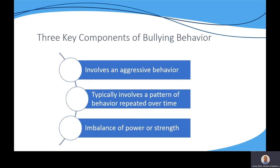Bullying is characterized by three components. It involves an aggressive behavior — behavior is not always physical. It typically involves a pattern of behavior repeated over time, although adults often are not aware of the patterns until a serious event occurs. And it involves an imbalance of power or strength, which can be physical, but often is emotional or a social imbalance.